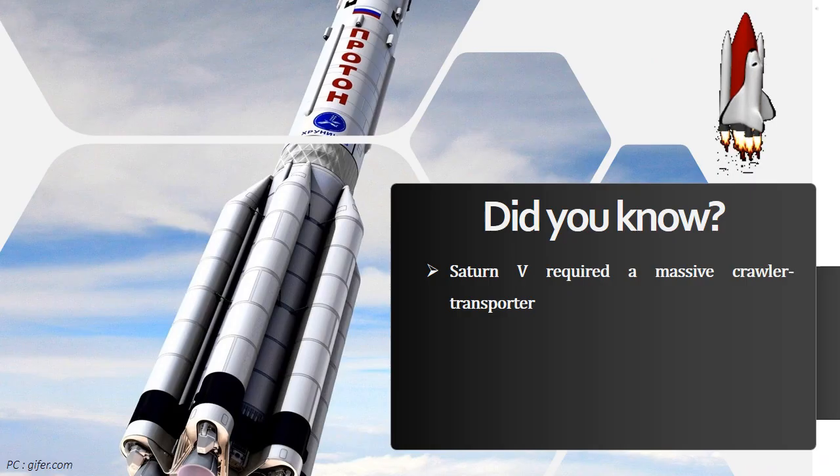Did you know? At around 6.5 million pounds fully fueled, the Saturn V required a massive crawler transporter to carry it to the launch pad. Maximum speed is 1 mile per hour.